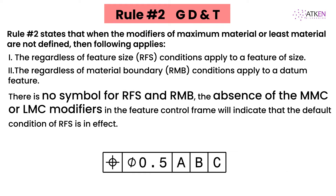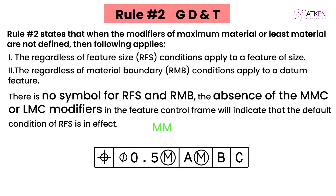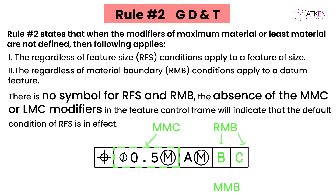Here in this feature control frame, RFS applies to the feature of size of diameter 0.5, and RMB applies to datums A, B, and C. For this feature control frame, MMC applies to the tolerance value, and RMB applies to datum B and C, while Maximum Material Boundary (MMB) applies to datum A.